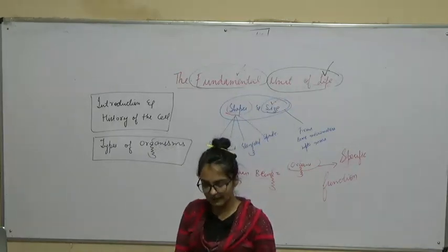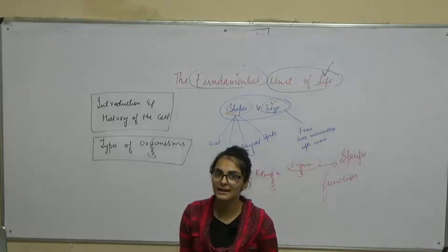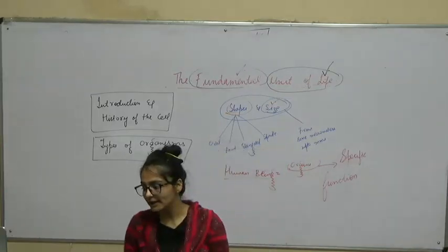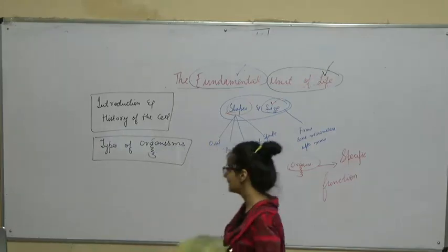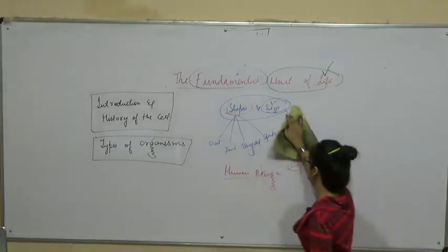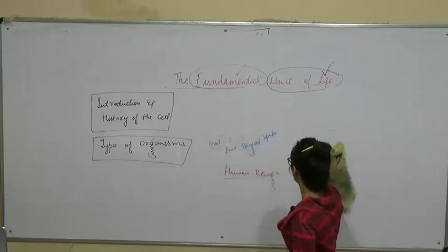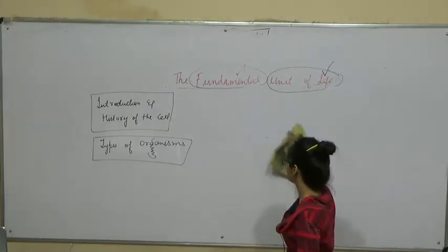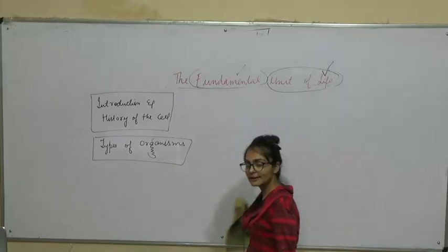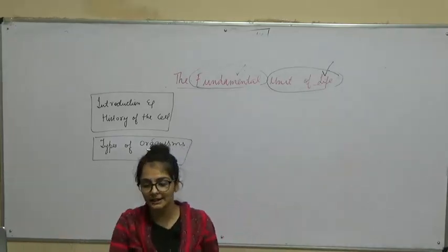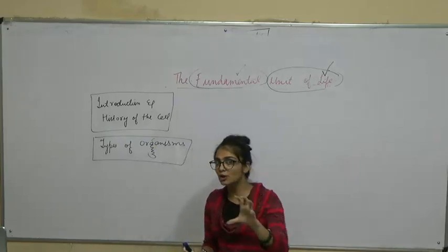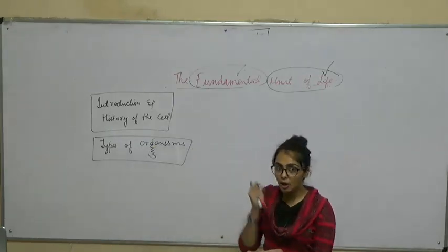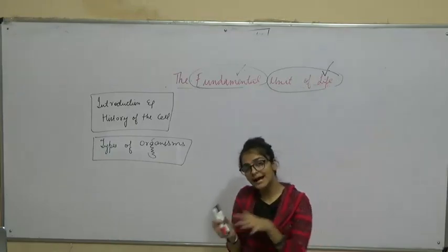Suppose karo koi singer hai, koi dancer hai, ya phir koi athlete hai. Uske kaam ke according uski body ki adaptation ho jaati hai — jis type ka usne kaam karna hota hai, uske according uske jo body ke organs hain, muscles hain, woh strong ya weak ho jaate hain. So variation ya alteration jo hai, woh kiske according ki gayi hai? According to its work — jis cell ne jo kaam perform karna hai, according to that adaptation, that cell is best suited to its shape and size.